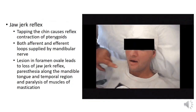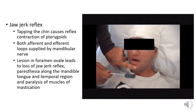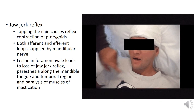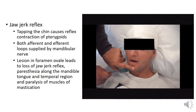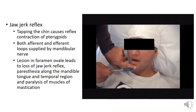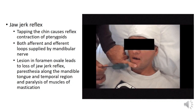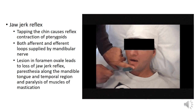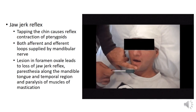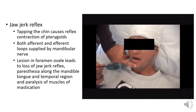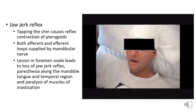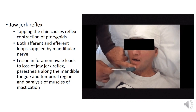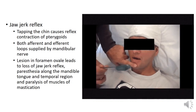Regarding the jaw-jerk reflex: tapping the chin causes reflex contraction of the pterygoid muscles. Both the afferent and efferent loops of this reflex are supplied by the mandibular nerve. Any lesion at foramen ovale — through which the mandibular nerve exits the skull — leads to loss of the jaw-jerk reflex, along with paresthesia along the mandible, tongue, and temporal region, and paralysis of the muscles of mastication.